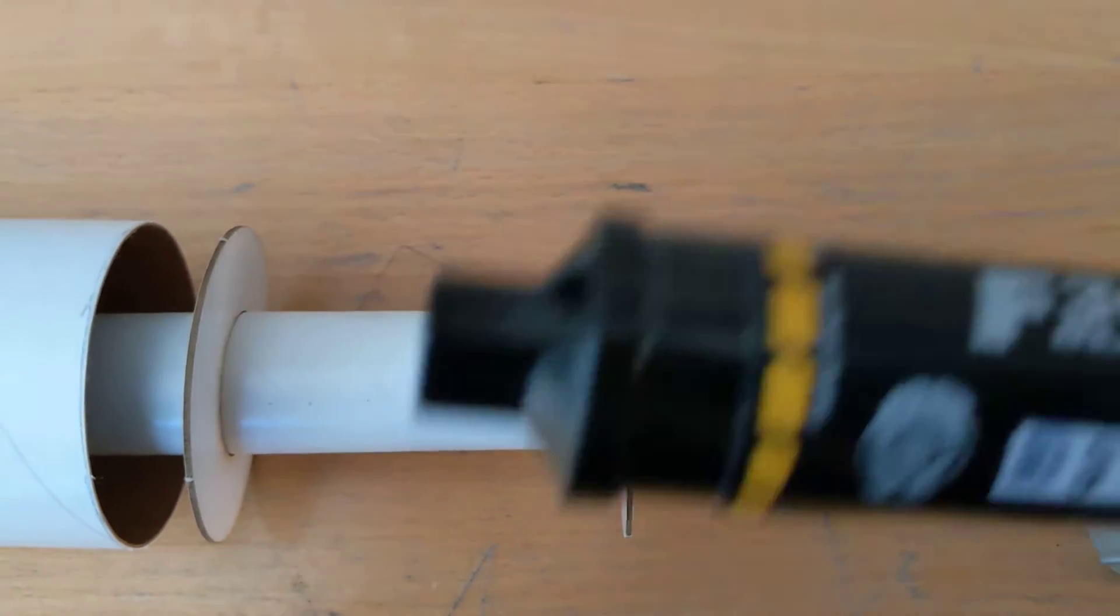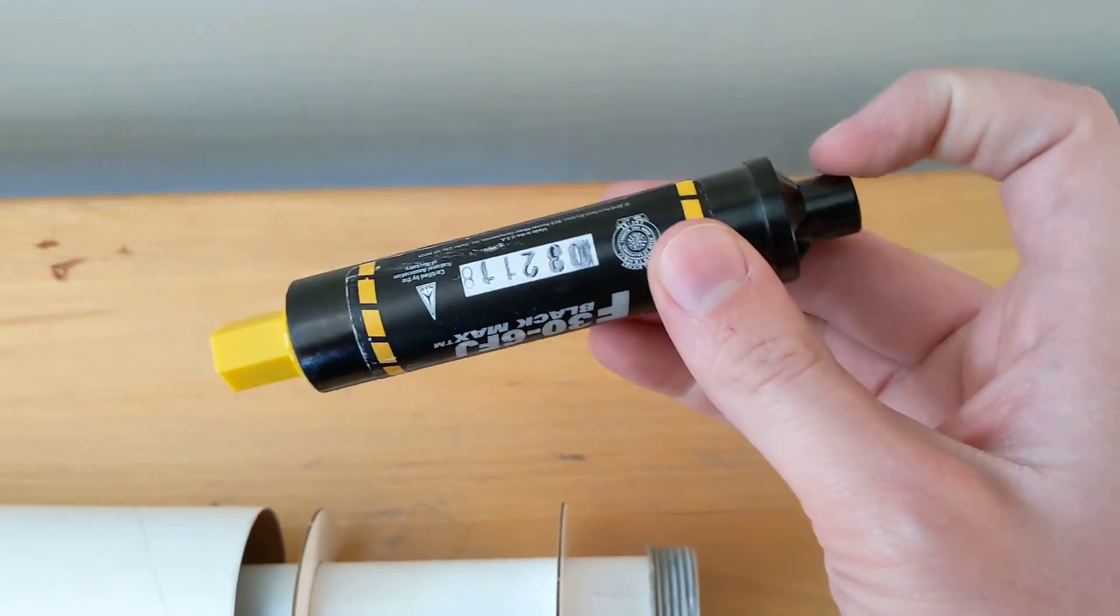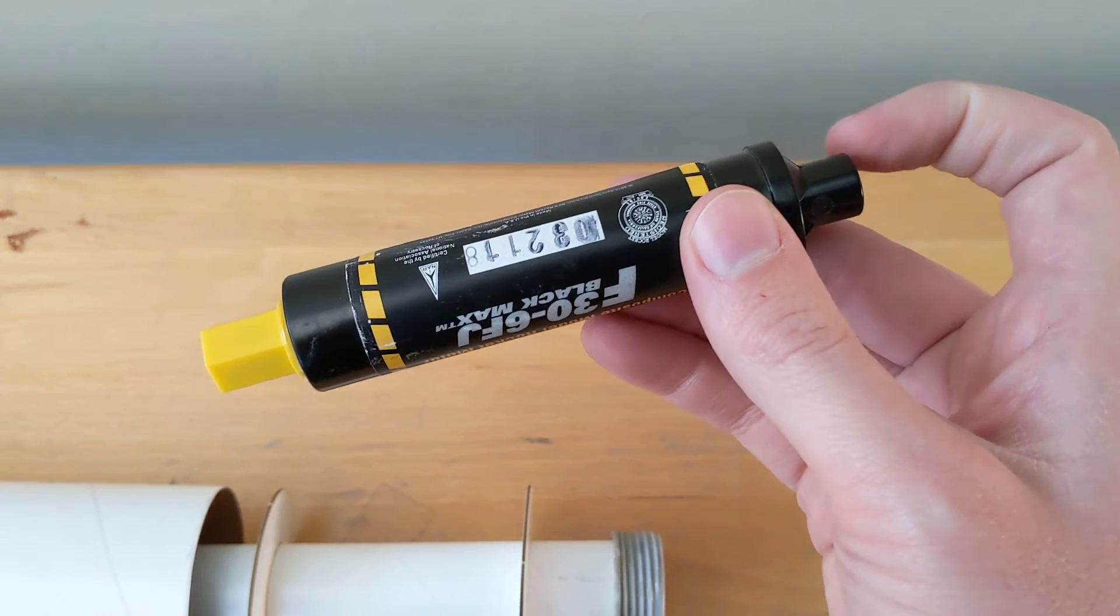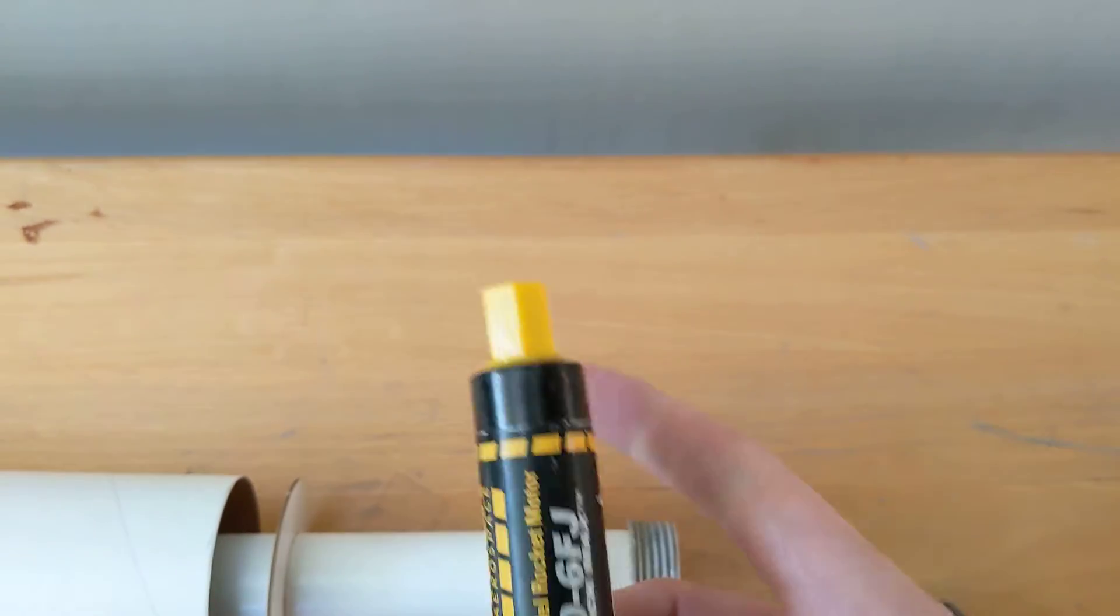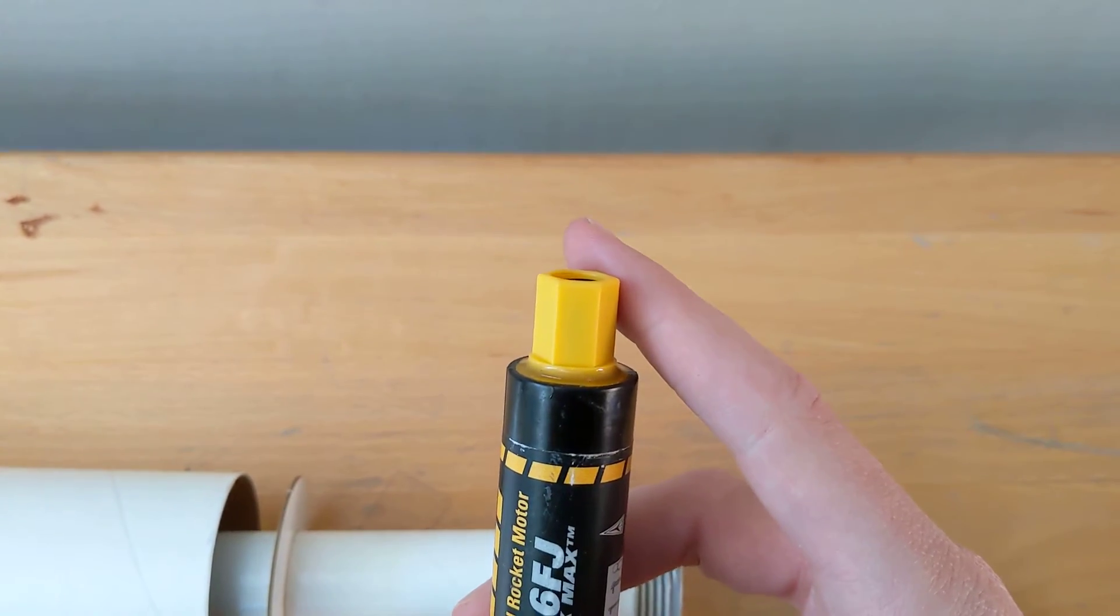The motor, here's our motor, so this is the business end of the motor. This is where the thrust comes out. This is where the ejection charge comes out.